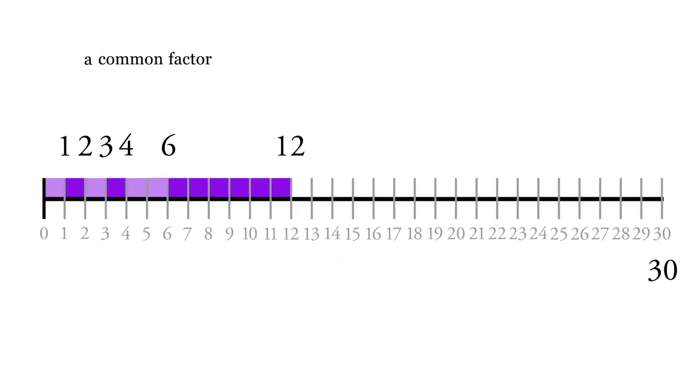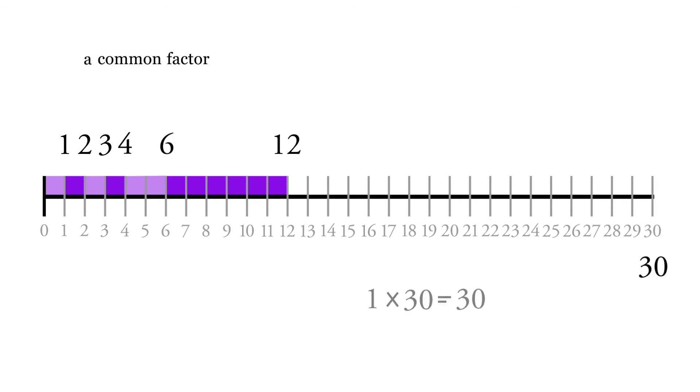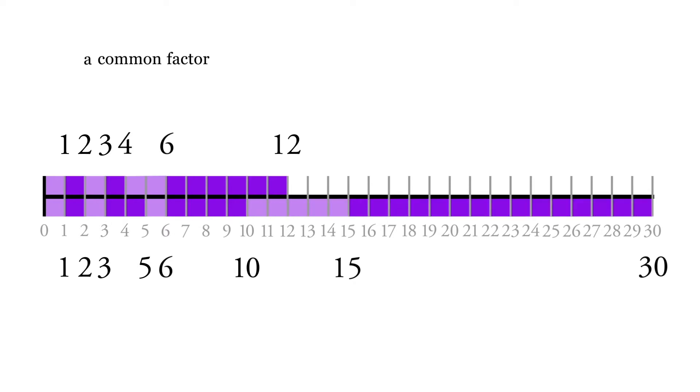Now, if we look at our factors of 30, we have 1 times 30, 2 times 15, 3 times 10. 4 doesn't go into 30, but we also have 5 times 6. So our numbers are 1, 2, 3, 5, 6, 10, 15, and 30. So what we're looking for is our greatest common factor. We're going to start up here: 30, 12, 15, 10, 6. Okay, now we see with 6, that's our biggest common factor.